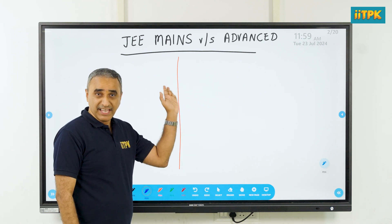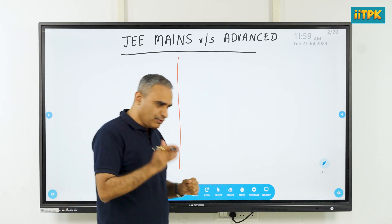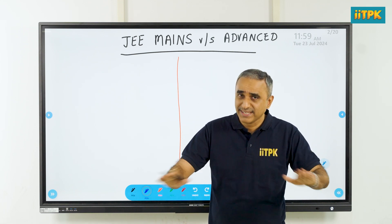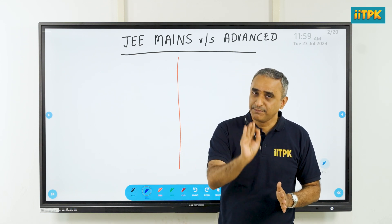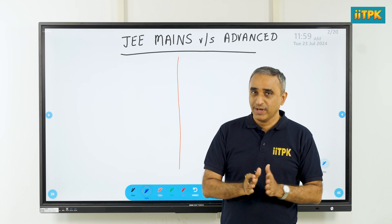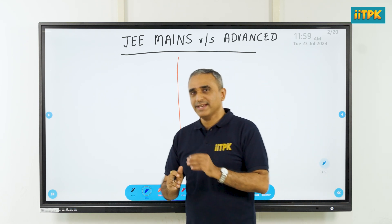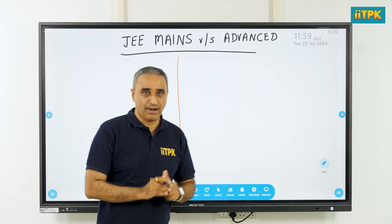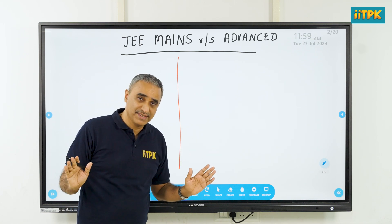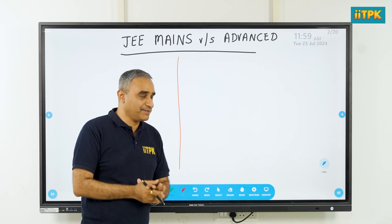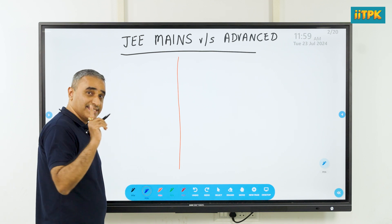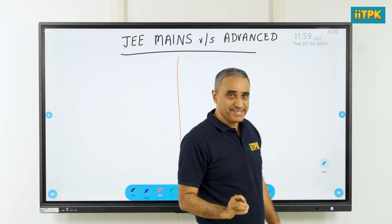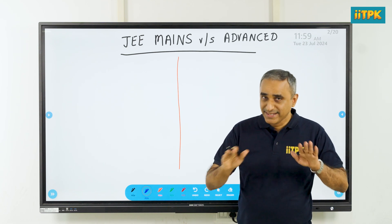Now let us understand the difference in the exam syllabus, difficulty level, and pattern. If you look at the syllabi of JEE Mains and JEE Advanced as of 2024, the syllabus is almost the same — there is only a 0.5 percent difference between the two examinations. Very few topics are in JEE Mains that are not in Advanced, or the other way around. By and large, 99.5 percent of the syllabus is the same. As far as difficulty level is concerned, there is a major difference.